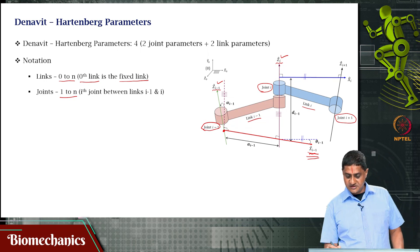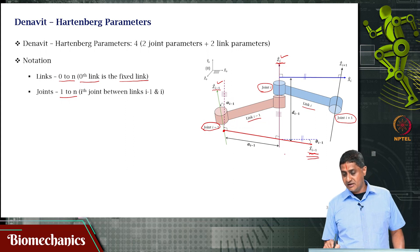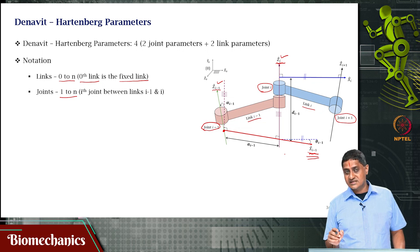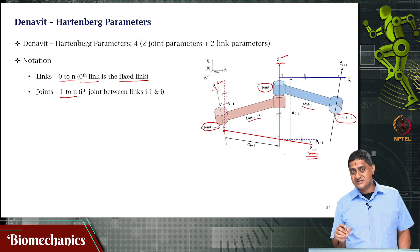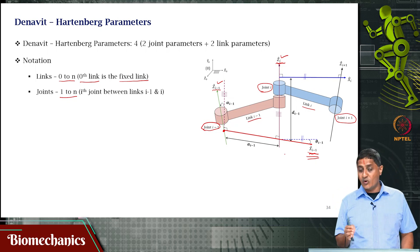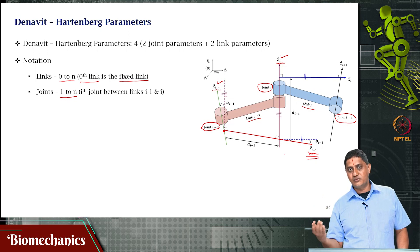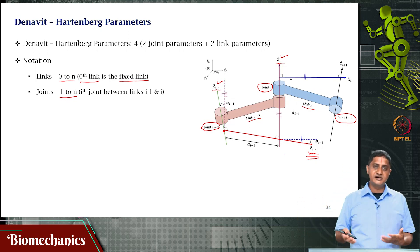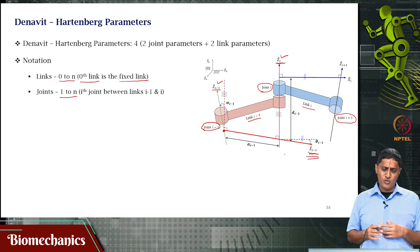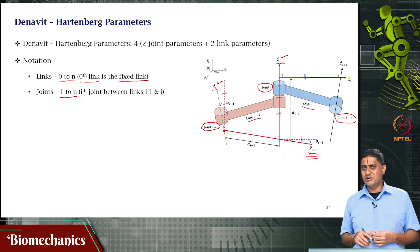Likewise, repeat this process for Z(i): the X(i) axis is the common normal between Z(i) and Z(i+1), and so on and so forth. Repeat this process — find Y(i), find Z(i+1), find X(i+1), find Y(i+1), and so on. This is done repetitively and iteratively. The framework looks a little complicated, but with some practice and understanding, we will be able to grasp it.